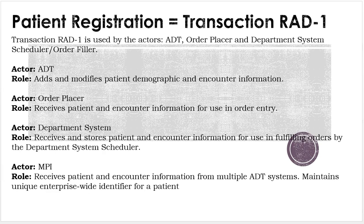Let's take a look at patient registration, which is transaction RAD-1. Transaction RAD-1 is used by the actors ADT, order placer, and department system scheduler order filler. The actor ADT adds and modifies patient demographics and encounter information. The actor order placer receives patient and encounter information for use in order entry. The actor department system receives and stores patient and encounter information for use in fulfilling orders by the department system scheduler. And MPI, the master patient index, receives patient and encounter information from multiple ADT systems and maintains a unique enterprise-wide identifier for a patient.